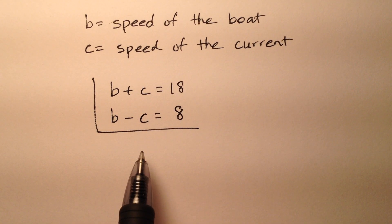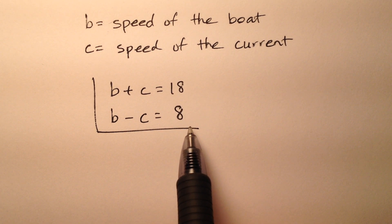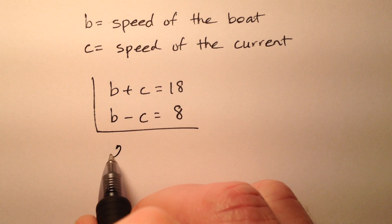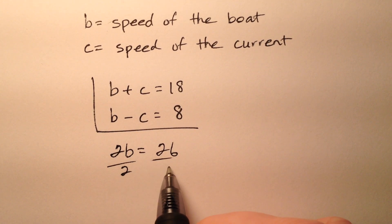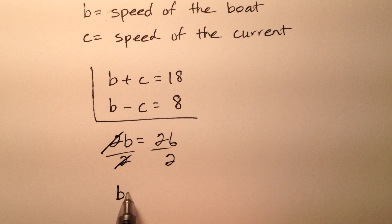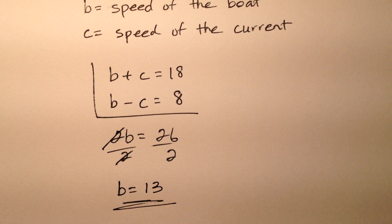It looks like our system here we can solve easily using elimination. Let's just go ahead and add the two equations, the currents cancel, so 2B equals 26. So when I divide both sides by 2, it looks like the speed of the boat will be 13, 13 miles per hour of course, but we'll get back to the units in a second.